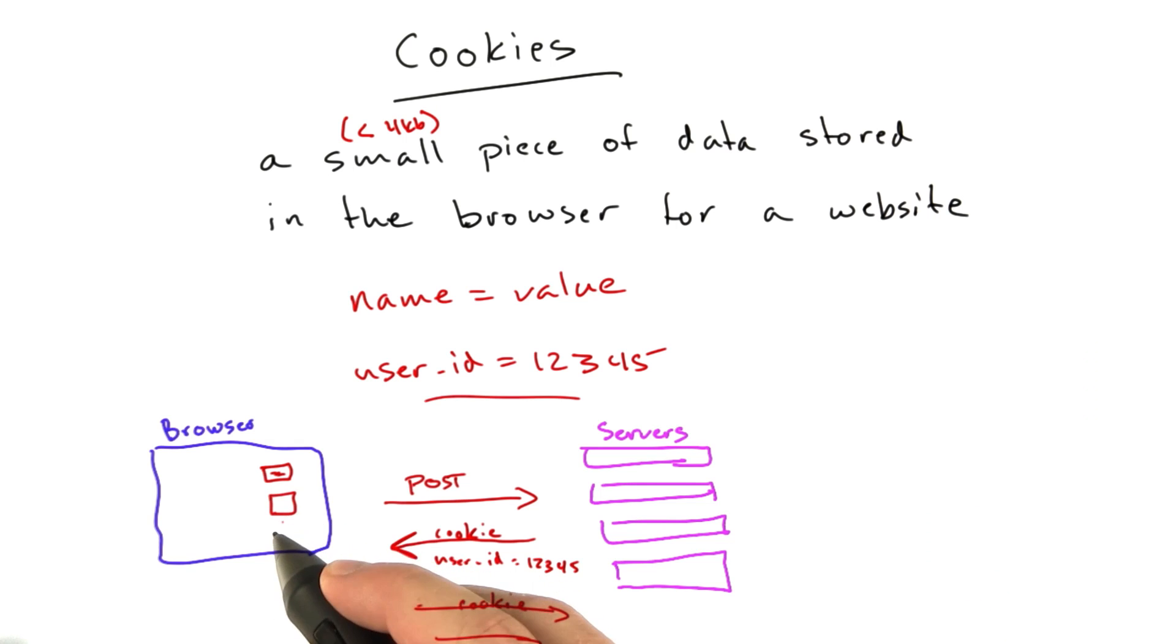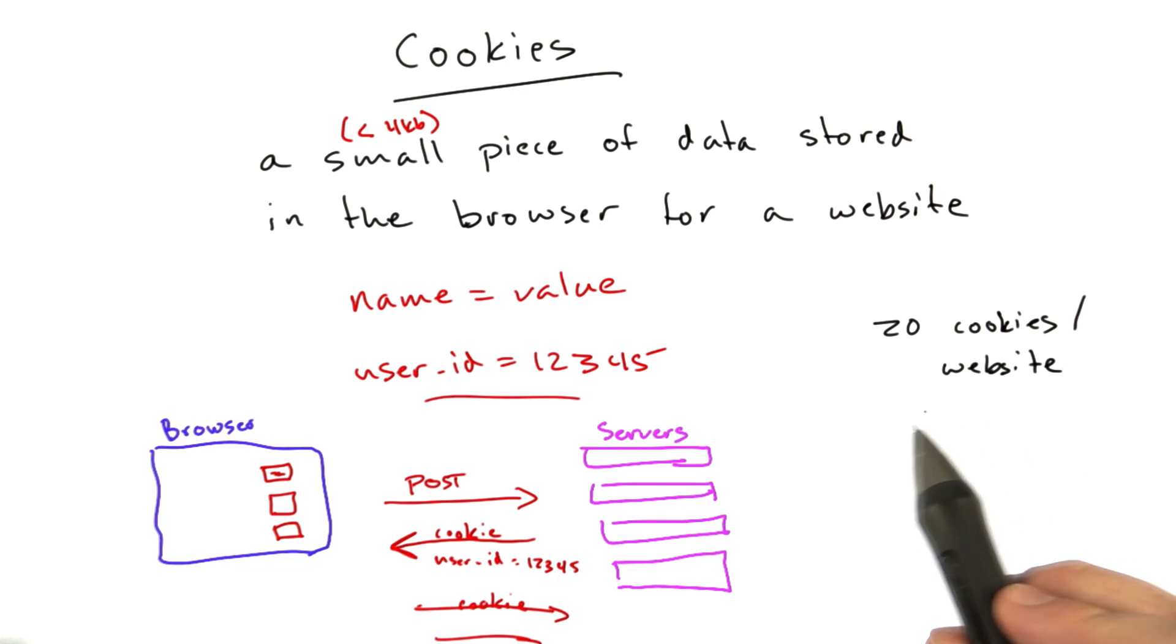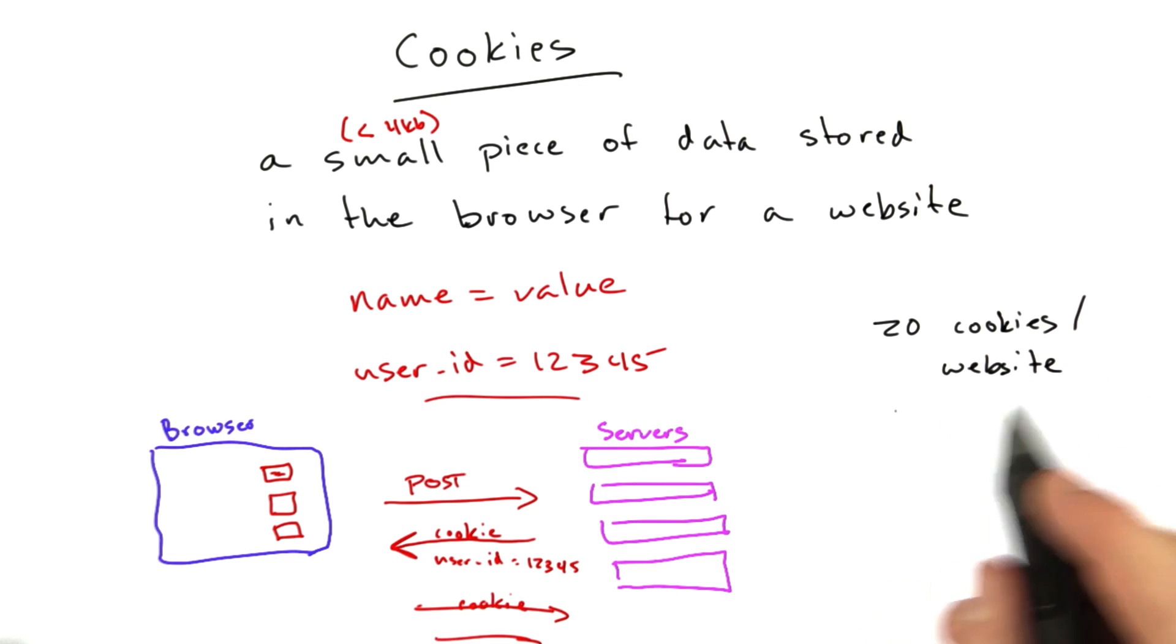And a cookie is just basically a file that your browser stores. Generally, you can store about 20 cookies per website. Now, this is basically up to the browser. It's a browser limitation.